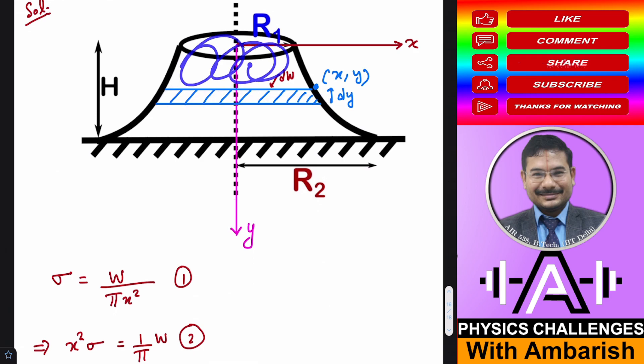And let's say this much weight is w. The amount of weight above y is, or you can say, in this much weight is let us say w. So what is the stress at this section? So if this is x, you can say that stress is nothing but w upon π x².